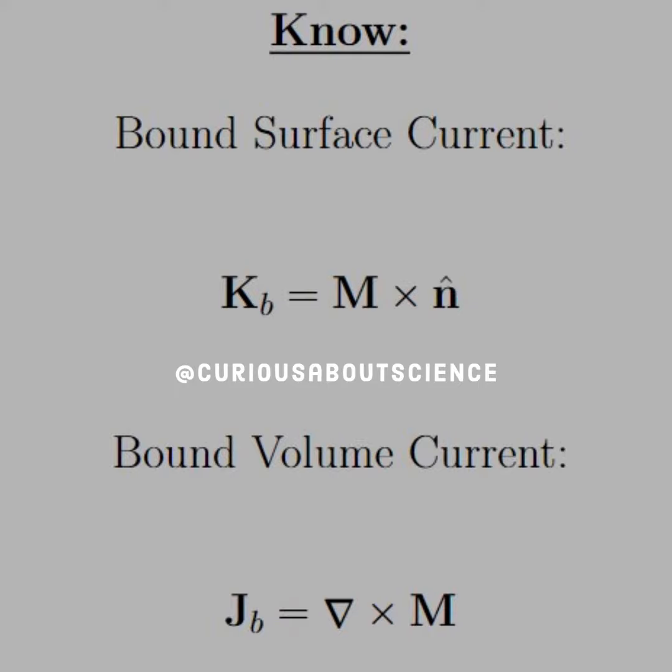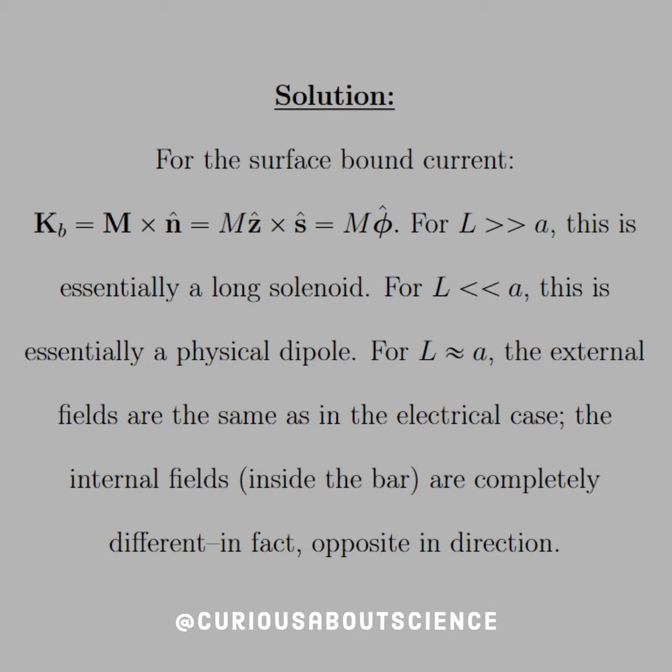Fair enough, we know what the bound surface and bound volume currents look like. Let's proceed. For the surface bound current, we know that K_B equals M cross n̂, which is just ẑ cross ŝ, gives us M φ̂ hat again. So now we just need to worry about what is the different situations.